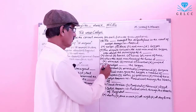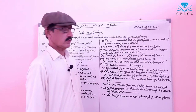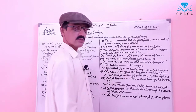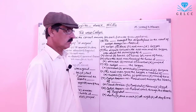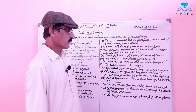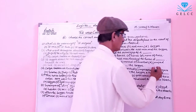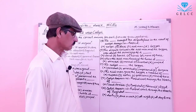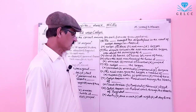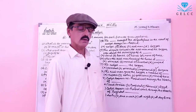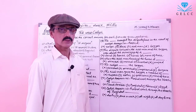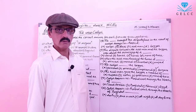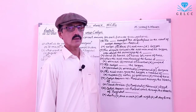Number 11: The Caliph did what to the beggar? Options: A: Punished. B: Arrested. C: Imprisoned. D: Forgave. The correct answer is option D — forgave. The Caliph forgave the beggar. The beggar was forgiven.